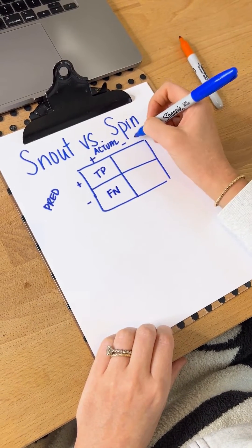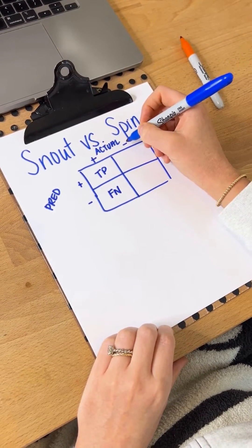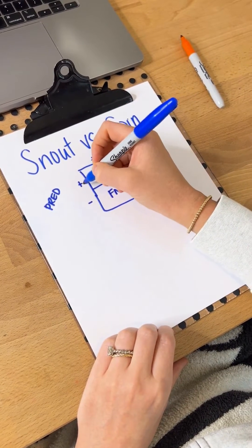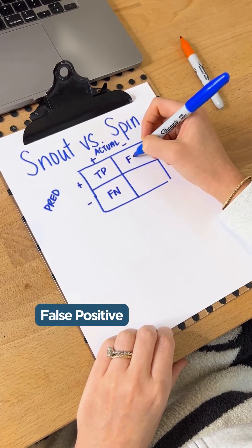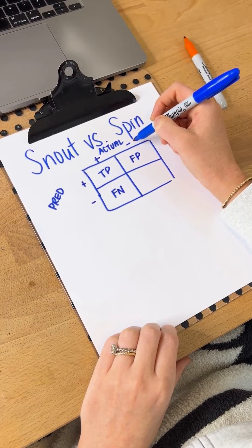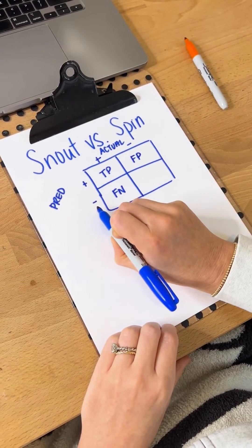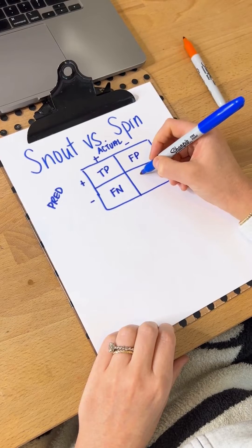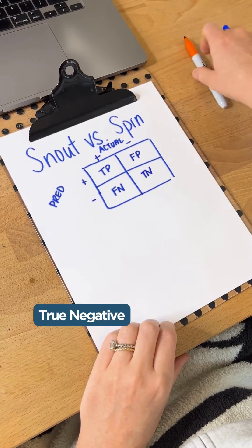If they actually didn't have it and the test showed that they did, this would be a false positive. And last, if they actually didn't have it and the test showed they also didn't have it, this would be a true negative.